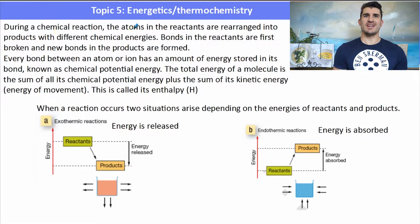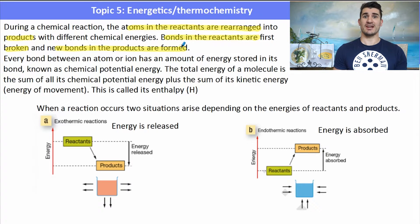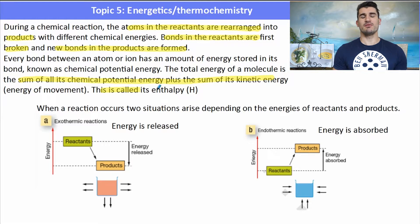During a chemical reaction, atoms in the reactants are rearranged into the products. Bonds in the reactants are first broken which is an endothermic reaction. Bond breaking relies on absorbing energy. Bond forming in the products is an exothermic reaction. Now the enthalpy is the sum of all of the chemical potential energy, that's all of the energy stored in the bonds and the sum of its kinetic energy. That's described as its enthalpy.